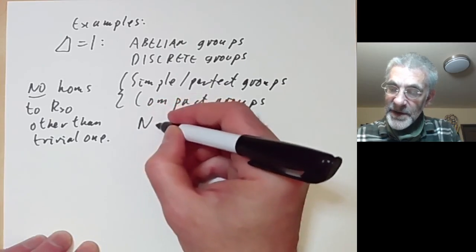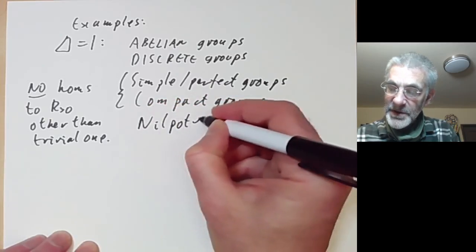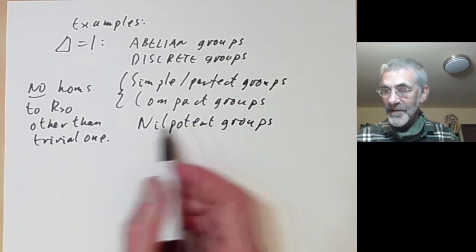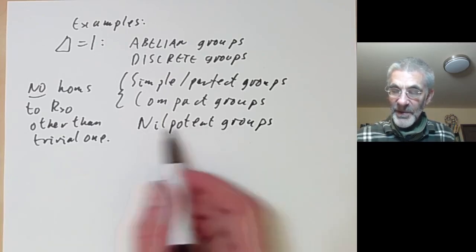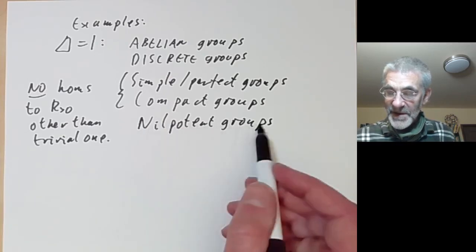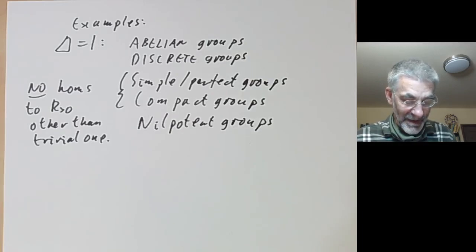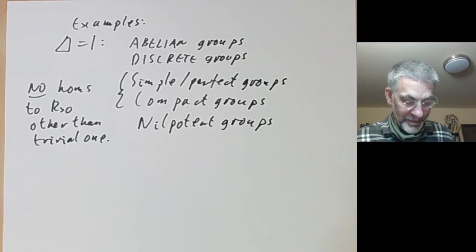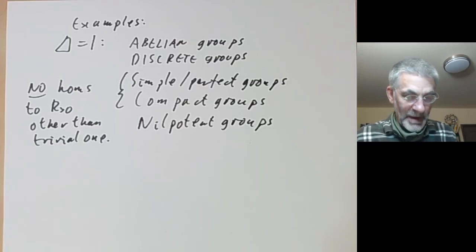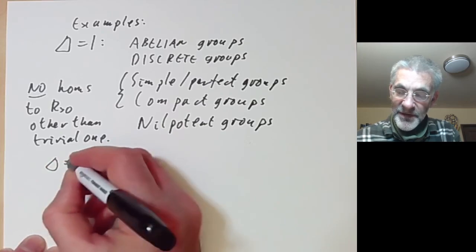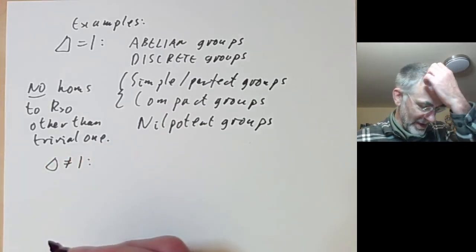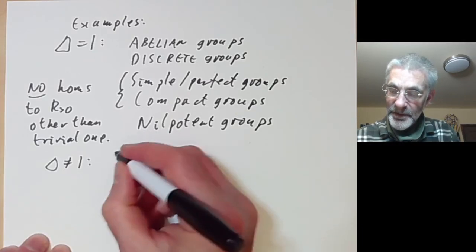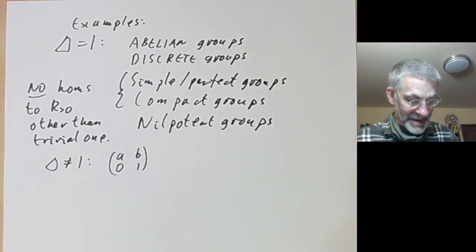It is slightly more tricky to show this is also true for nilpotent groups. You can check that the adjoint action of a nilpotent group preserves the highest exterior algebra of the Lie algebra. We can also have examples where the modular function is not equal to one, and obviously this is going to happen for the ax+b group of two-by-two matrices.